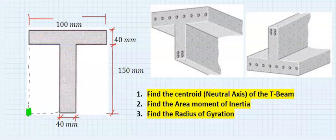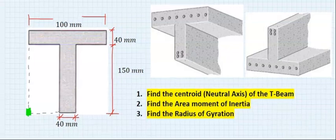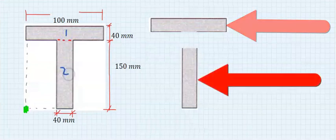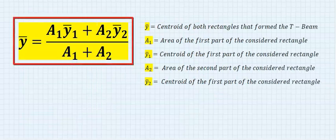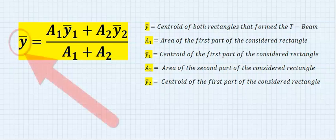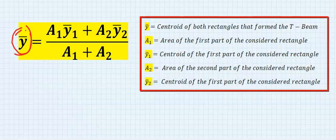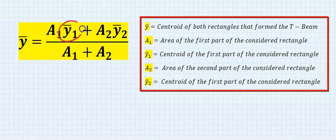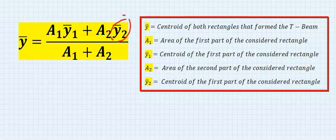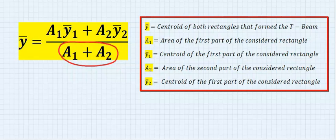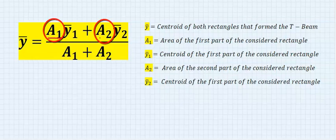Step number one: split the T-beam into two rectangular parts. This part will be rectangle one and this will be rectangle two. Step number two: write out the formula for the centroid of the T-beam along the y-axis, usually written as y-bar. This includes the centroid and area of each rectangle and the sum of both areas.